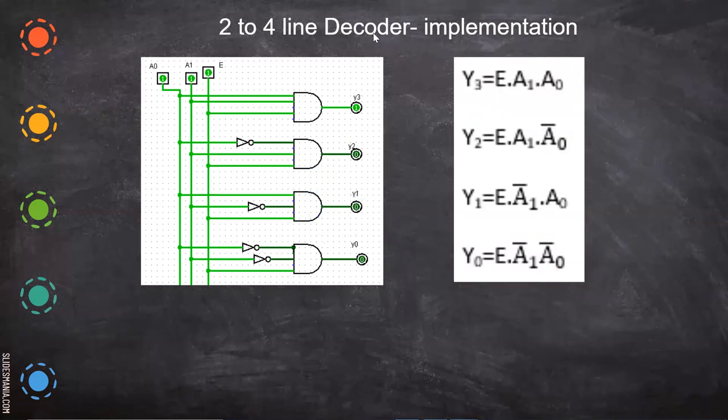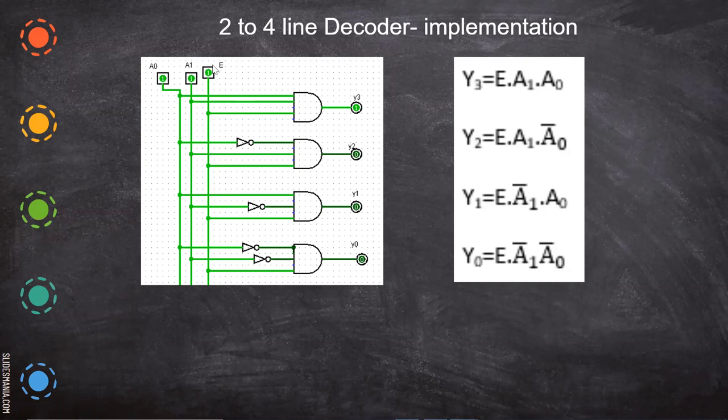Now, two to four line decoder, how you can implement it? See here, A0, A1 and this is the enable signal. So enable signal is given for all the AND gates. There are four AND gates. The output will be individual. So we give all the combinations. So when this is on, and when you give this based on this, the output varies. Any one of this output will be selected.